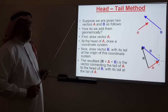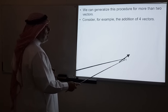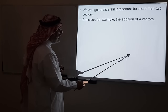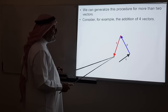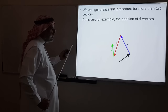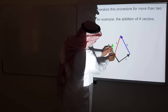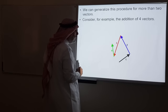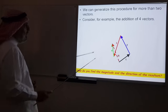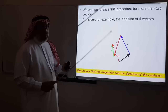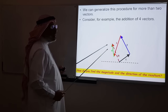You can apply the head-tail method to as many vectors as you have. You draw vector 1, then from its head draw vector 2, then from the head of 2 draw vector 3, and so on. The resultant is the vector that closes the diagram — it goes from the tail of the first to the head of the last. The magnitude is found by measuring the length of the resultant line multiplied by the scale of the drawing, and the direction is the angle the resultant makes with the positive x-axis.